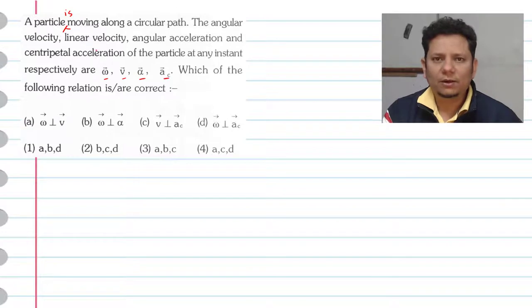So your angular velocity is omega, linear velocity is v, angular acceleration is alpha, ac is centripetal acceleration. Which of the following relations is or are correct? Options 1, 2, 3, 4. These relations are given.